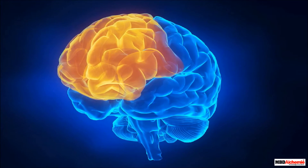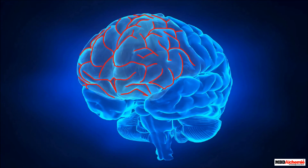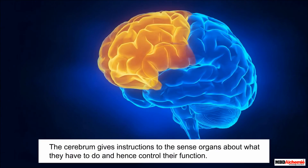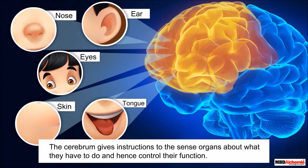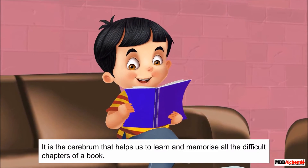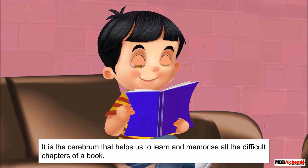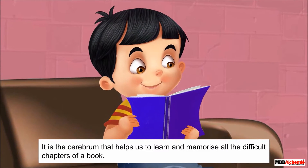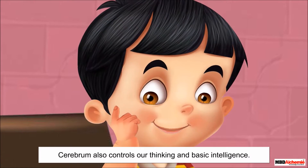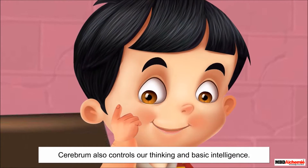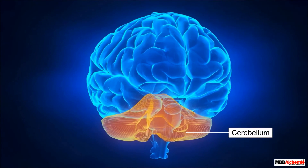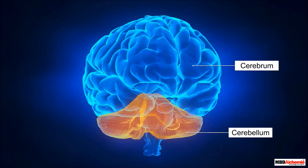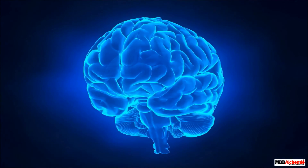The cerebrum is the largest part of the brain. It is dome-shaped and located in the front area of the skull. The surface of the cerebrum has deep folds and grooves. The cerebrum gives instructions to the sense organs and controls their function. It is the cerebrum that helps us learn, memorize, think, and governs our basic intelligence.